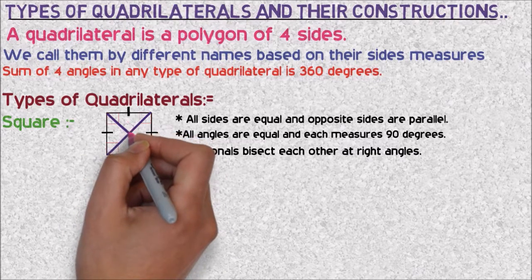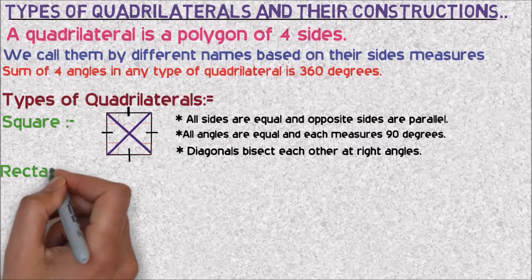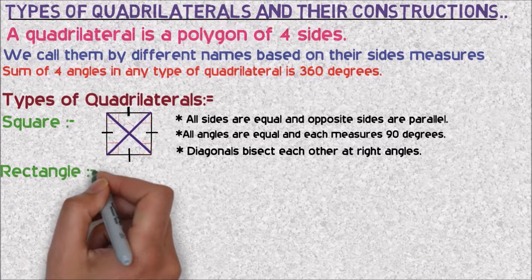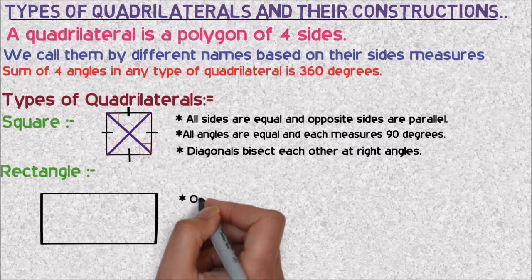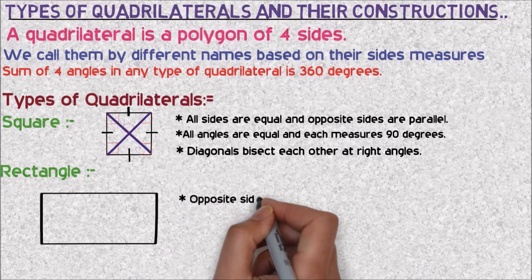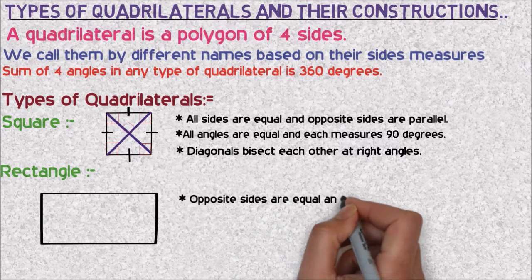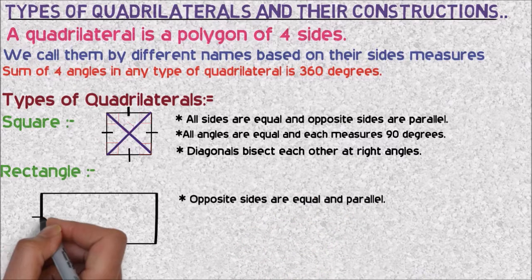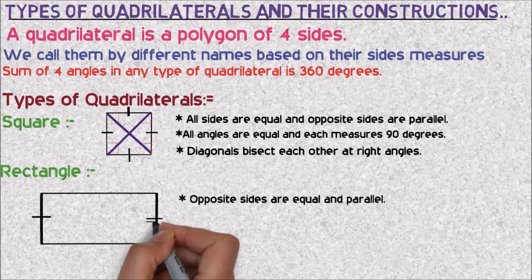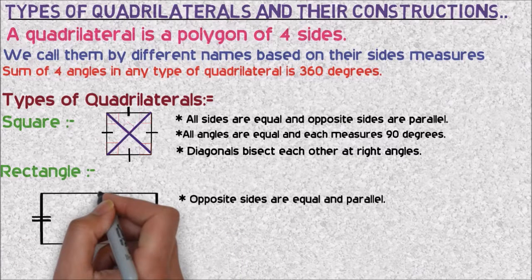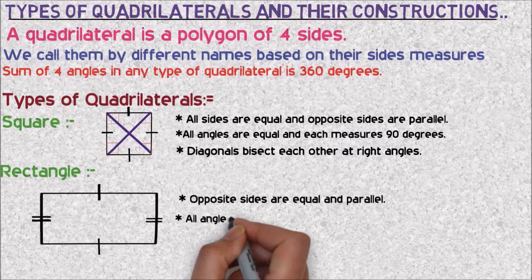Next, see about rectangle. Here, opposite sides are equal and parallel. And same as square, all angles are equal and each measures 90 degrees.